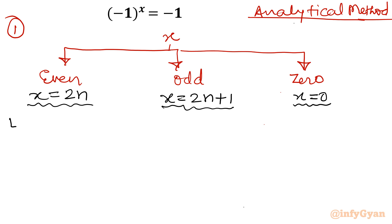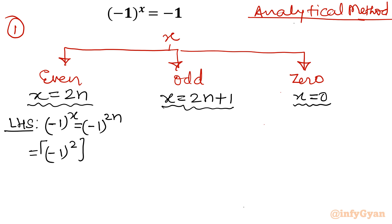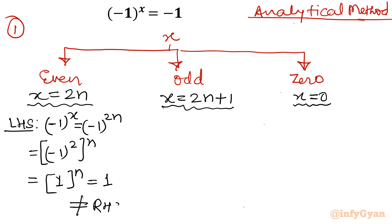Let me write minus one on the LHS first. Minus one power x would be equal to minus one power 2n. By the exponent property, we can write minus one power 2, whole power n. This value will be 1 raised to the power n. Any base of 1 with exponent n gives value 1 always, which is not equal to RHS. That means x equal to 2n, the even case, is not our solution — no solution here.